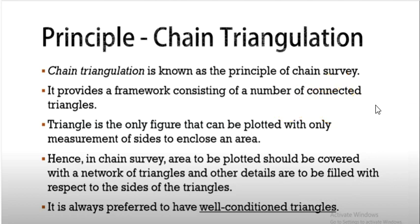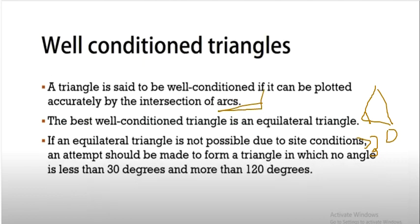Here is the well-conditioned triangle. Suppose this is a triangle with angles. Suppose it's 30 degrees. This is known as well-conditioned triangle. A triangle is said to be well-conditioned if it can be plotted accurately by the intersections of arcs. The best well-conditioned triangle is an equilateral triangle.